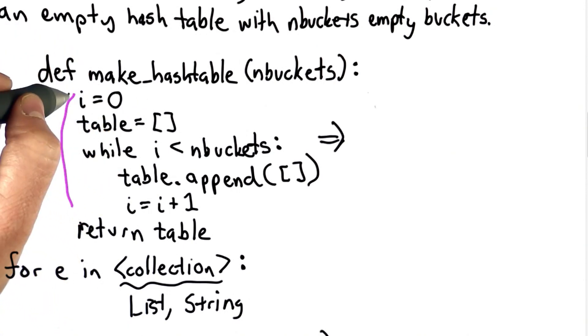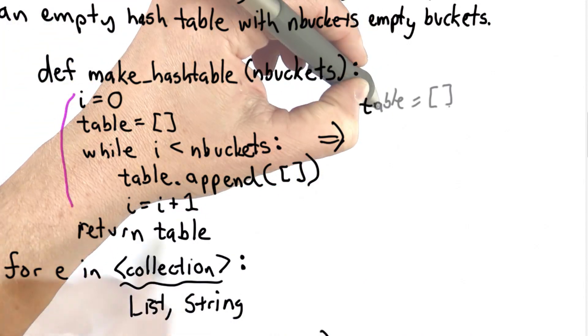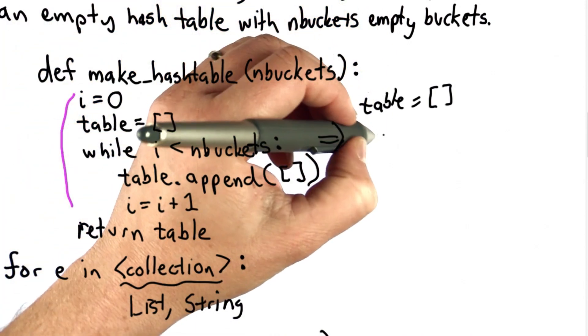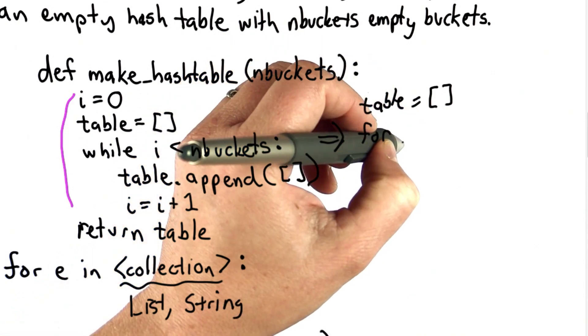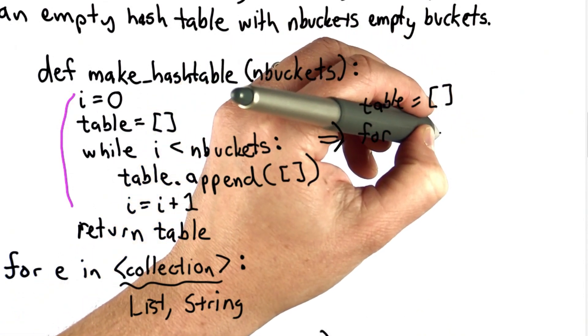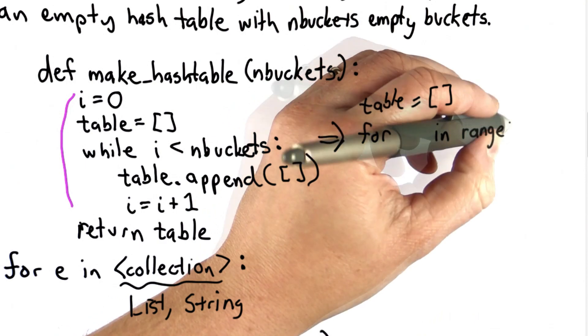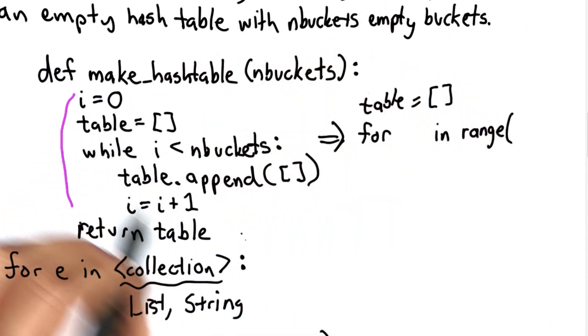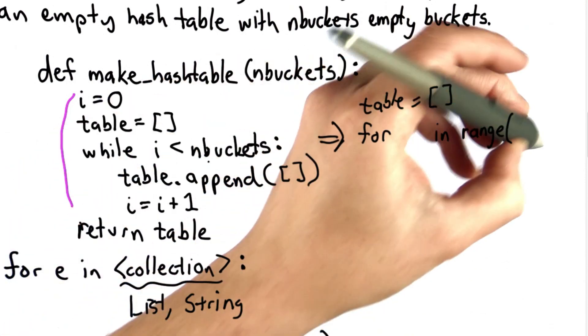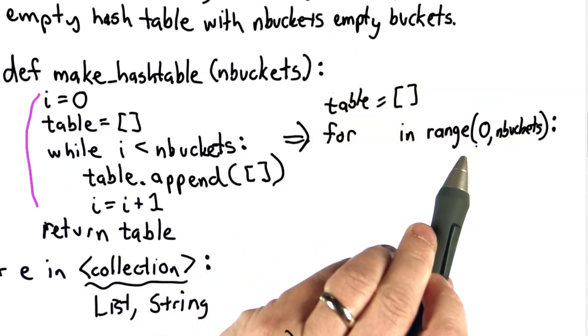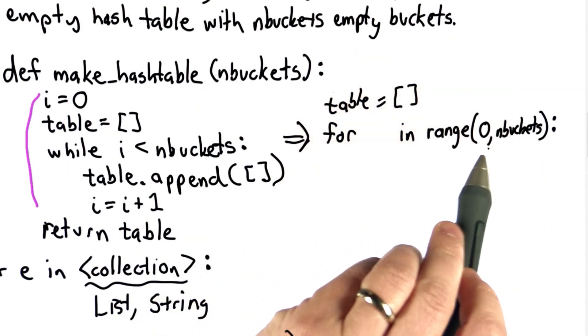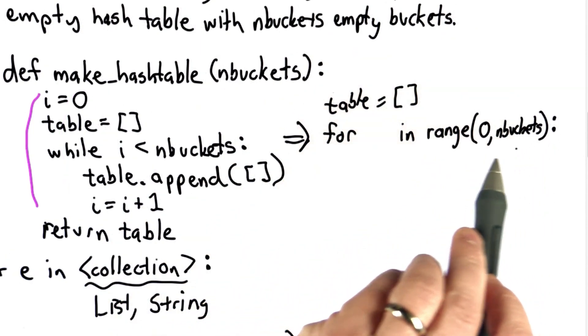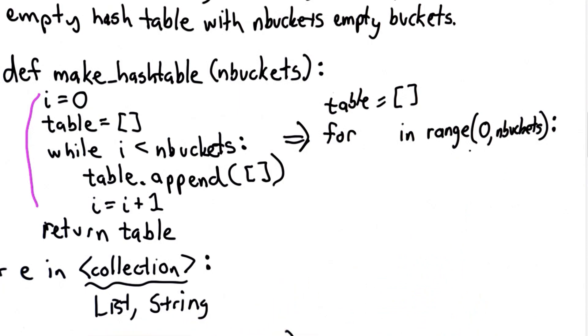We're no longer going to need the variable i. We still need table. And now instead of using a while loop, we're going to use a for loop. I'm going to leave the variable name blank for a second. We'll figure out what to put there later. And what we're looping through is from the range from 0 up to n buckets. So we're going to loop through the elements of the list range to n buckets. That's going to be the list of numbers from 0 to n buckets minus 1.